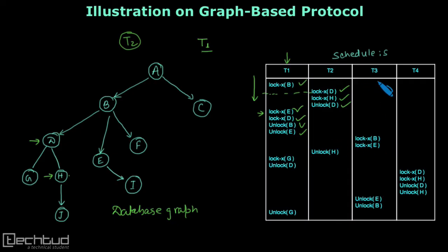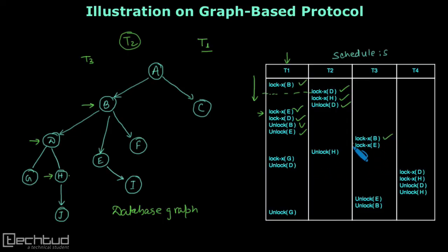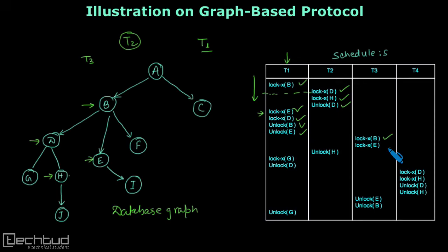After this, transaction T3 starts and it requests a lock on database item B. As it is the first lock by transaction T3 and B is not locked, this lock is granted. T3 also requests a lock on item E. To acquire a second or third lock by transaction T3, we need the parent locked. Since B is already locked, we can grant this lock on E as well.